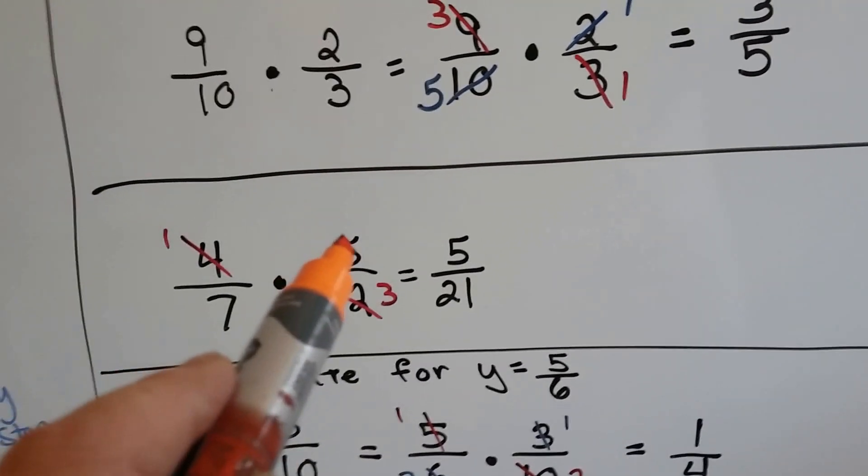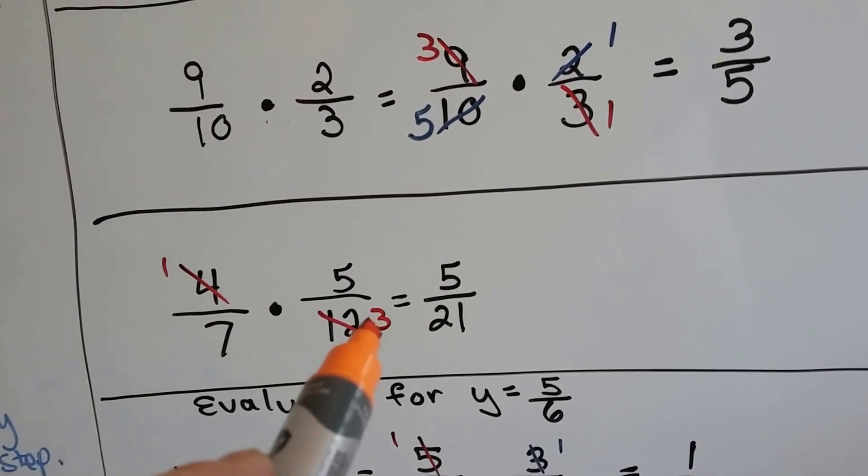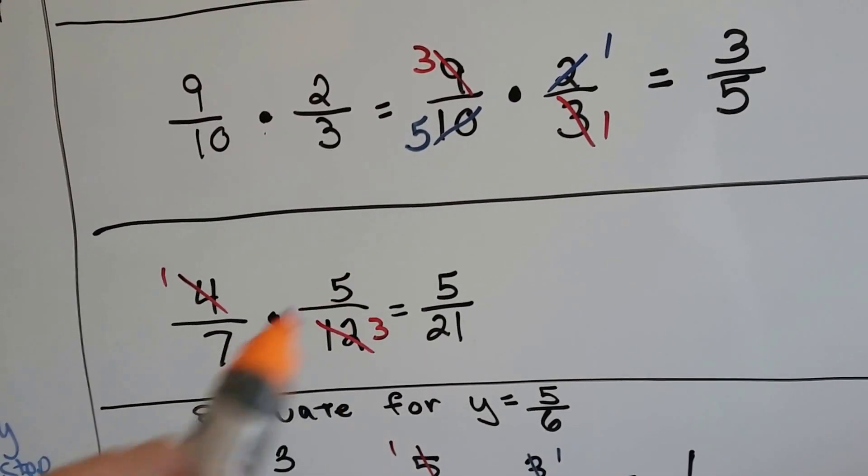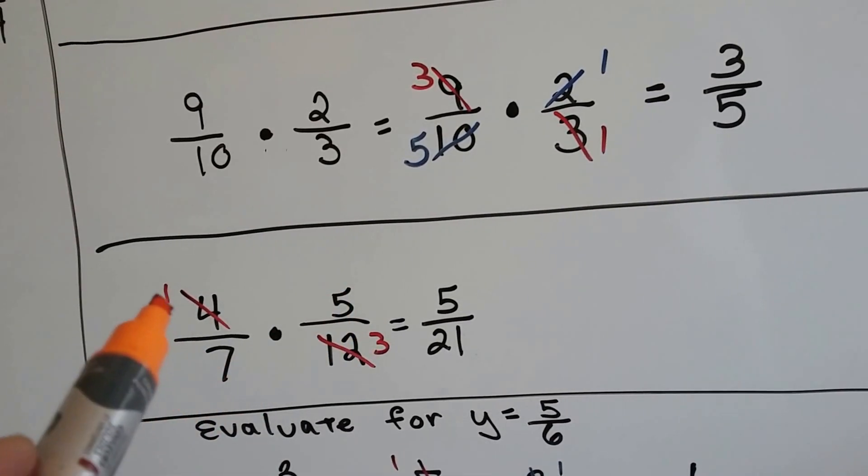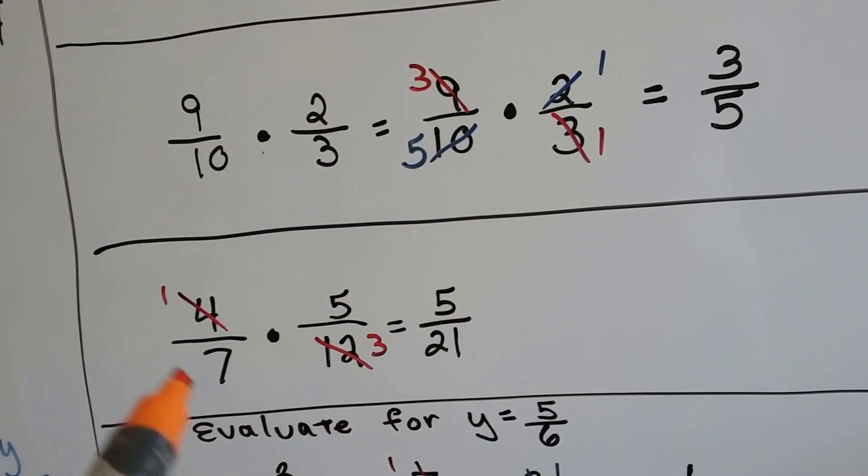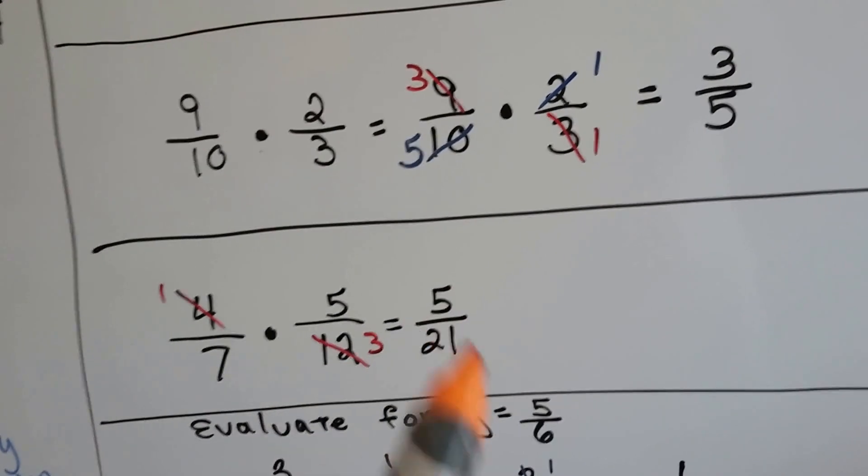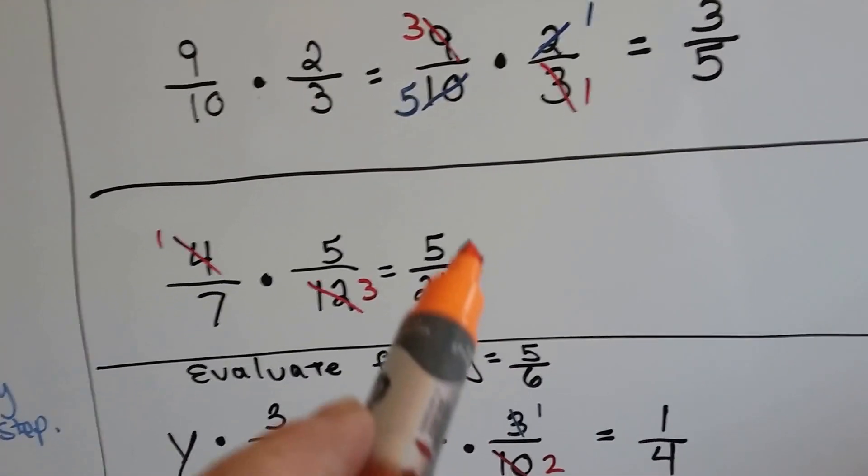Four-sevenths times five-twelfths. Four can go into twelve three times. These can't do anything. Five and seven can't do anything with each other. So we have one times five is five, and seven times three is twenty-one. We have five twenty-firsts.